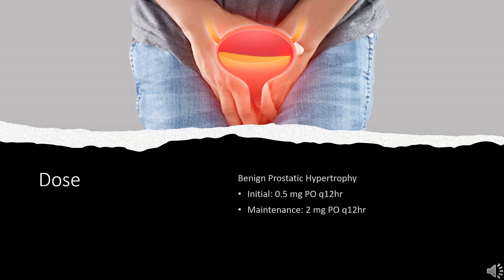For Raynaud phenomenon (off-label): 0.5–1 mg PO daily at bedtime, or 0.5 mg PO BID; adjust dose based on response and tolerability up to 12 mg per day divided BID or TID.